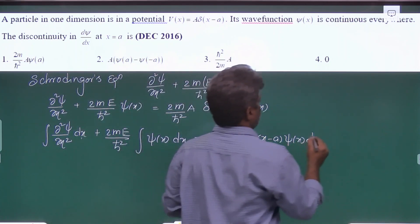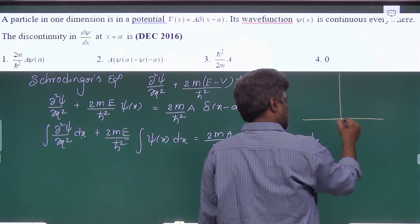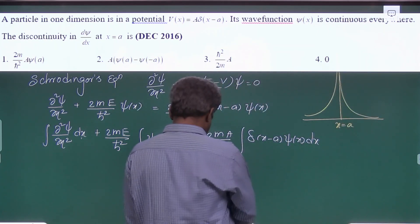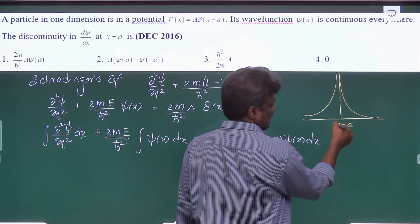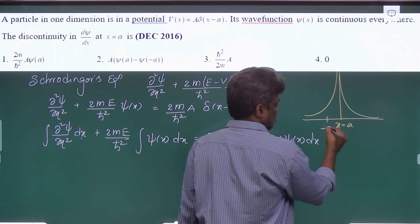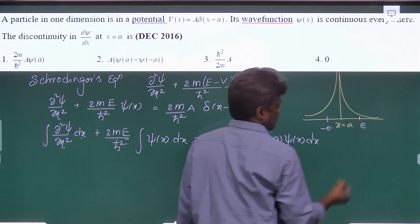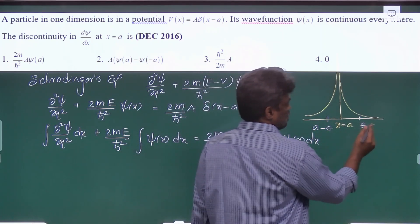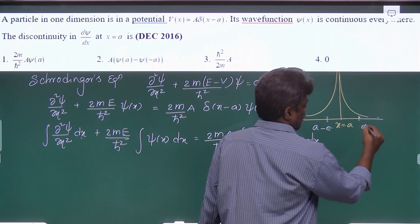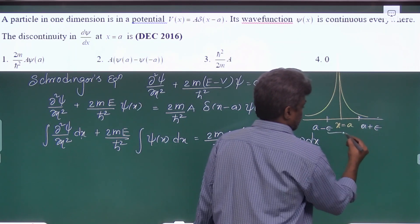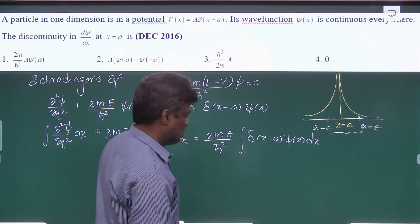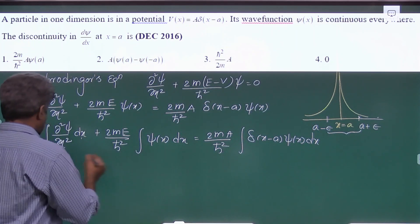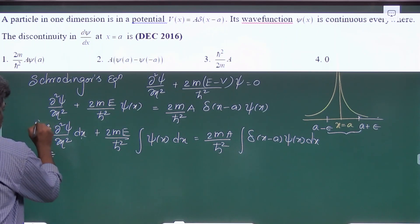Now what about the limits? If we look at the delta potential curve, the center is at x equal to a. To take the neighborhood around x equal to a, we set the limits from a minus epsilon to a plus epsilon — that is, a neighborhood around x equal to a.